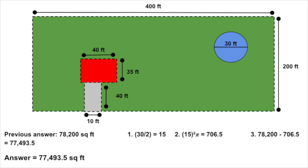We're into fractions of square feet now. It's not as much fun, but you'll find that this is very often the case — more often than coming up with nice clean numbers. So let's subtract the area of the pool from the area of the lawn. That's 78,200 minus 706.5, and we get 77,493.5 square feet.